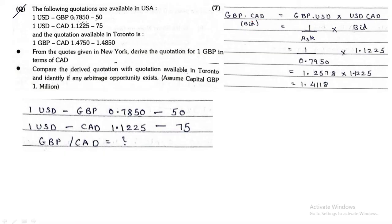For GBP to CAD cross rate bid: first you write GBP at the start, CAD at the last, and you multiply with the common, which is USD. GBP to USD — here it is given as USD to GBP, and they're asking GBP to USD, so it becomes inverse: 1 upon ask. USD to CAD is in the same direction, so we take directly the bid. So it is 1 upon ask into bid. You divide and multiply, and whatever answer you get will be your bid rate.